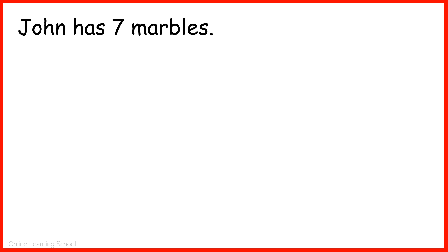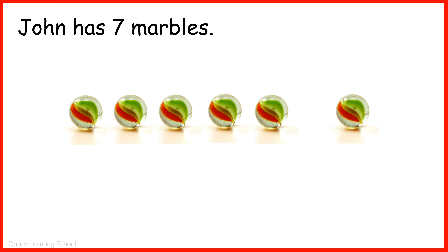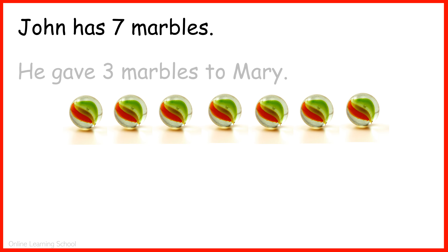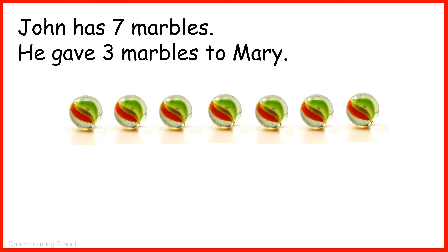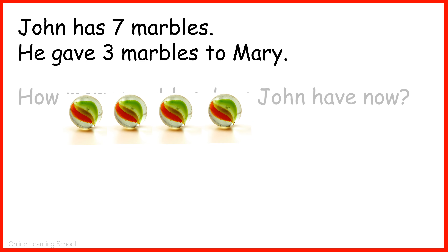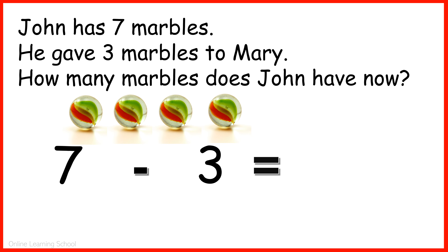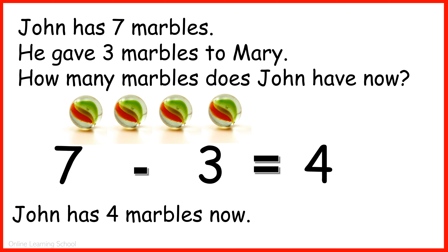John has seven marbles: one, two, three, four, five, six, seven. He gave three marbles to Mary: one, two, three. How many marbles does John have now? Seven minus three equals four. John has four marbles now.